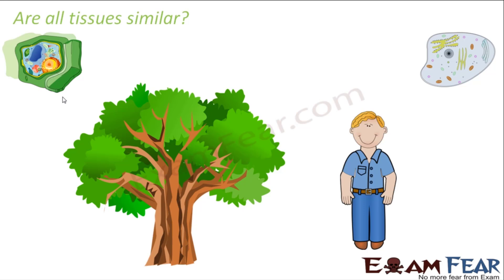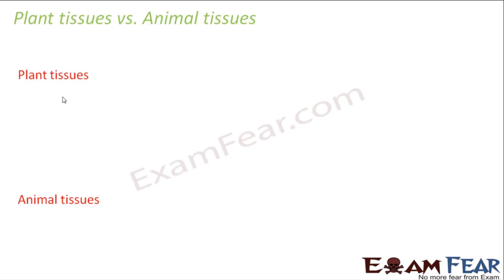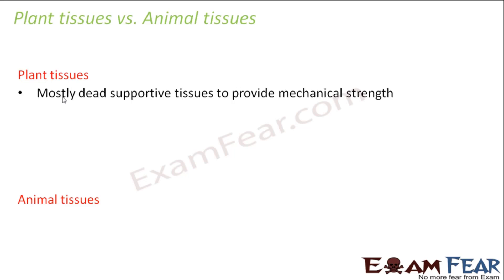So the tissues are different — structurally, because the cells are different, and functionally, because the two types of organisms lead different kinds of lives. For example, animals move from one place to another, whereas plants are always static, fixed at one place. The way an animal obtains and prepares food is quite different from how a plant does. The lifestyle of a plant and an animal is very different, and that is why functionally the tissues are quite different.